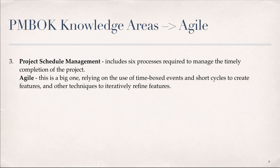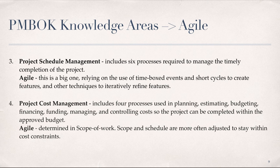Project Schedule Management includes six processes required to manage the timely completion of the project. In Agile, this is a big one, relying on the use of time-boxed events in short cycles to create features and iteratively refine them. Project Cost Management includes four processes used in planning, estimating, budgeting, financing, funding, managing, and controlling costs so the project can be completed within the approved budget. In Agile, scope and schedule are more often adjusted to stay within cost constraints.